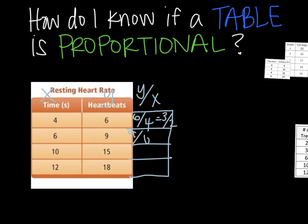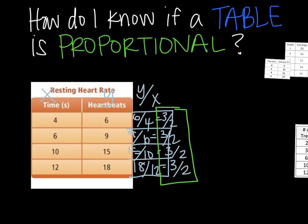9 over 6, again, can be simplified to 3 over 2. 15 over 10. And then 18 over 12. And again, we can simplify all of those to 3 over 2. Because they all are the same here, this would make it proportional. Okay? Or, yes, this would be a proportional table.